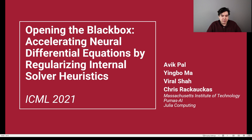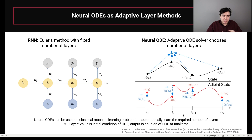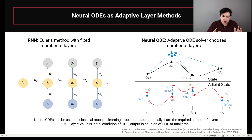You may have heard of techniques like adjoints of neural ODEs. What we're going to show is that using the information from within the equation solver can greatly improve the training process. The underlying problem we're talking about is neural ODEs as adaptive layer methods, also known as implicit layers. While a recurrent neural network requires a fixed number of layers, a neural ODE can do machine learning in a way that automatically optimizes hyperparameters, because the adaptive ODE solver is choosing the number of layers for you.